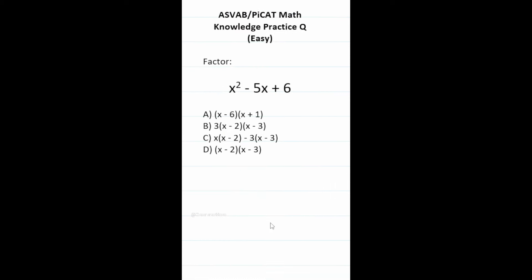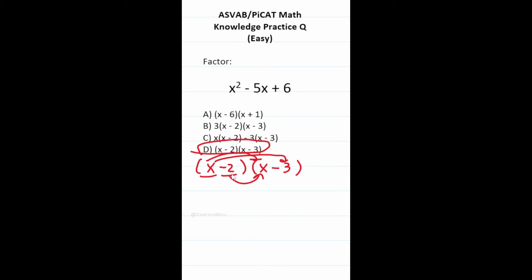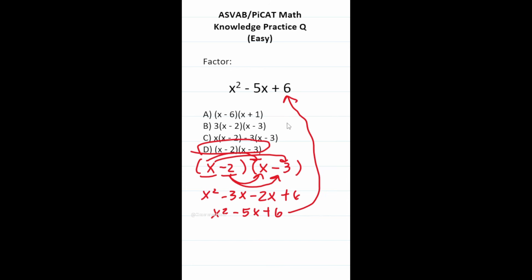This ASVAB PiCat practice question says: factor x squared minus 5x plus 6. Since this is a quadratic with a leading coefficient of 1, we're looking for two numbers that multiply to positive 6 and add to negative 5. That's negative 2 and negative 3, so the answer is D. Checking via FOIL: x squared minus 3x minus 2x plus 6 reduces to x squared minus 5x plus 6, confirming D is correct.